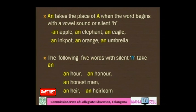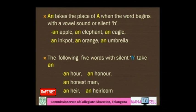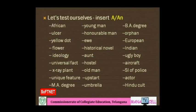'An' takes the place of 'a' when the word begins with a vowel sound or silent 'h'. For example: an apple, an elephant, an eagle, an inkpot, an orange, an umbrella — the first sound of all these words is a vowel. Also, the following five words with silent 'h' take 'an': an hour, an owner, an honest man, an heir, an heirloom. In all these, the letter 'h' is not pronounced, so we use 'an'.